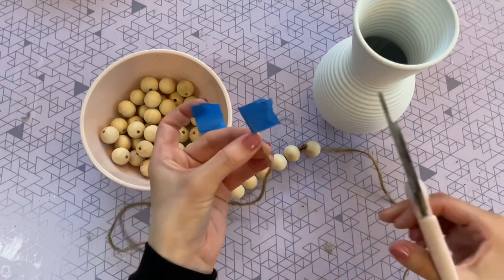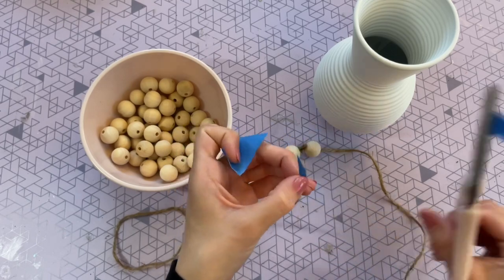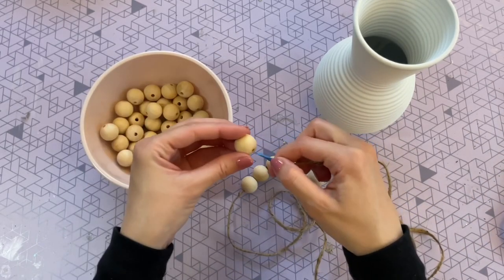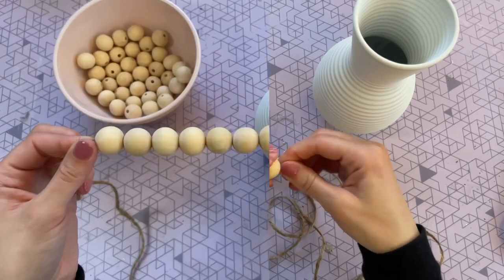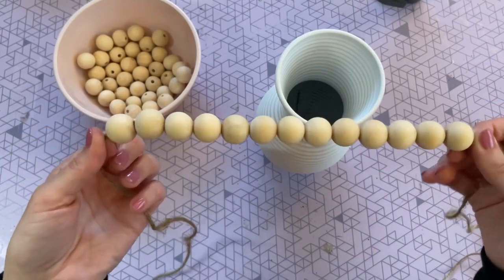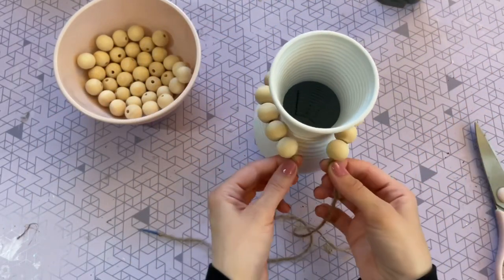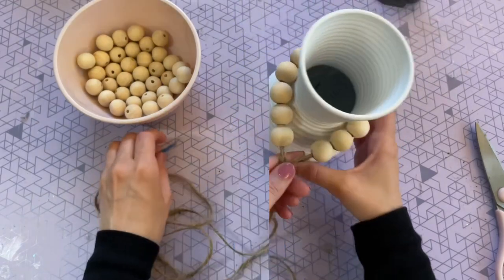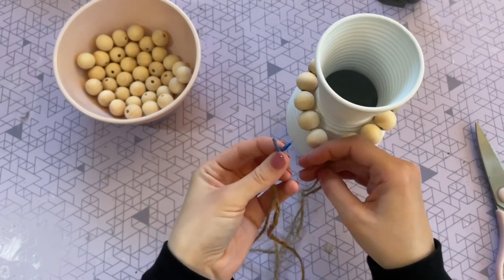If you're having any difficulties getting the beads on the twine, just put a little bit of painter's tape on the edge. And that way they just go on a lot easier. Dollar Tree does actually offer some smaller wood beads in their crafter square. So be sure to check there first. So here is my strand and I have those 13 beads. I want to make sure that it fits around the neck of my vase.